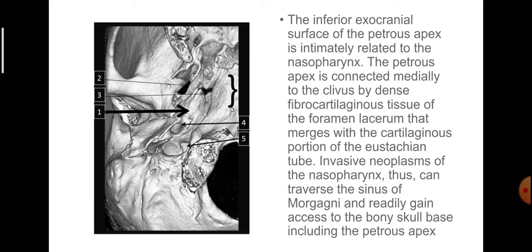The inferior exocranial surface of the petrous apex is intimately related to the nasopharynx. The petrous apex is connected medially to the clivus by dense fibrocartilaginous tissue of the foramen lacerum that merges with the cartilaginous portion of the eustachian tube. Invasive neoplasms of the nasopharynx can traverse the sinus of Morgagni and readily gain access to the bony skull base including the petrous apex.